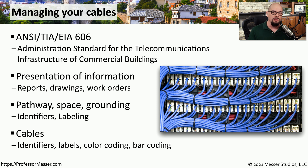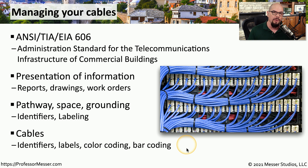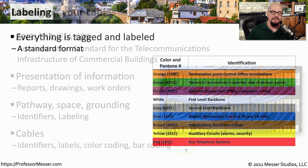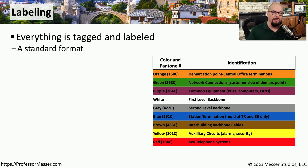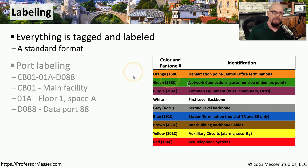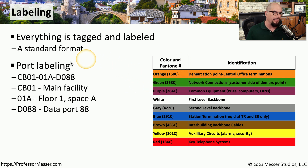Having labels on these cables can be critical, because when problems occur, it's important to know where both ends of that cable may be. So you need to make sure you have identifiers, labels, or perhaps even color coding or bar coding. The 606 standard can help quite a bit with understanding the best way to label and how you can keep that labeling consistent between locations. For example, each of your facilities may be labeled in a very specific way — a label may show CB01, 01A, D088.